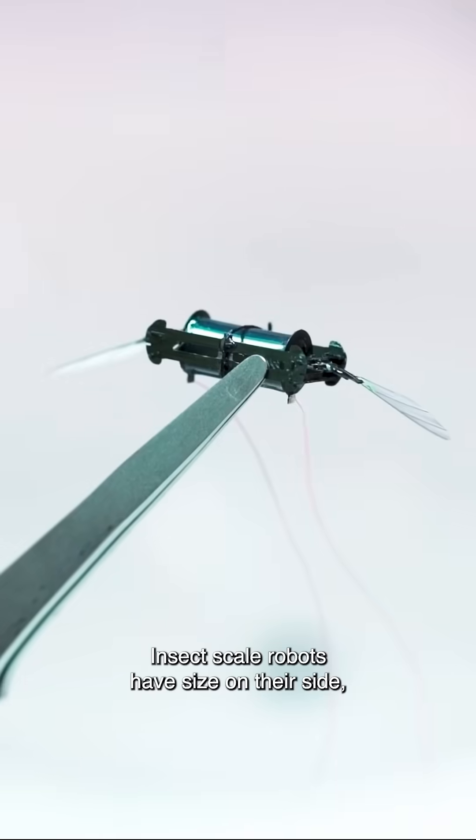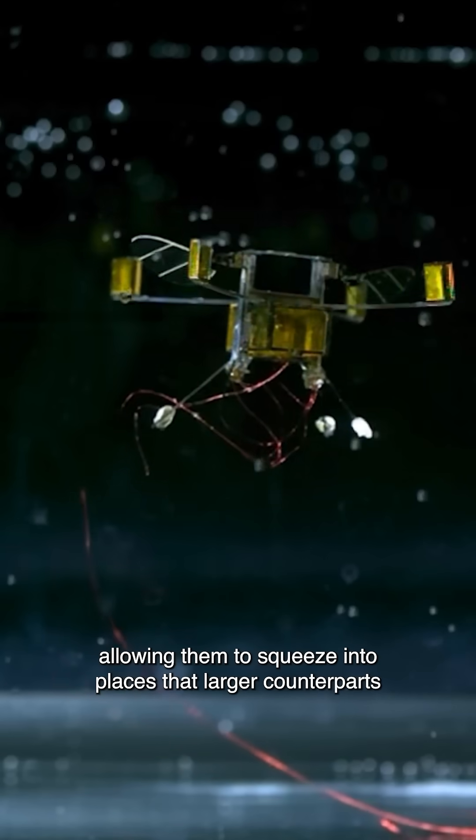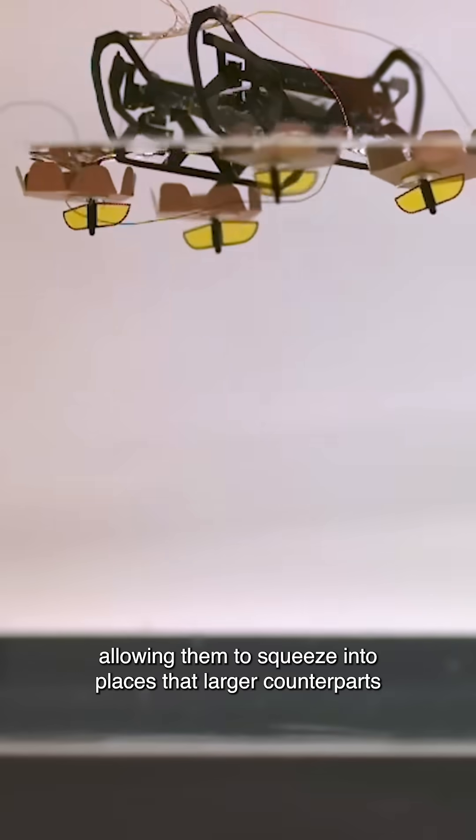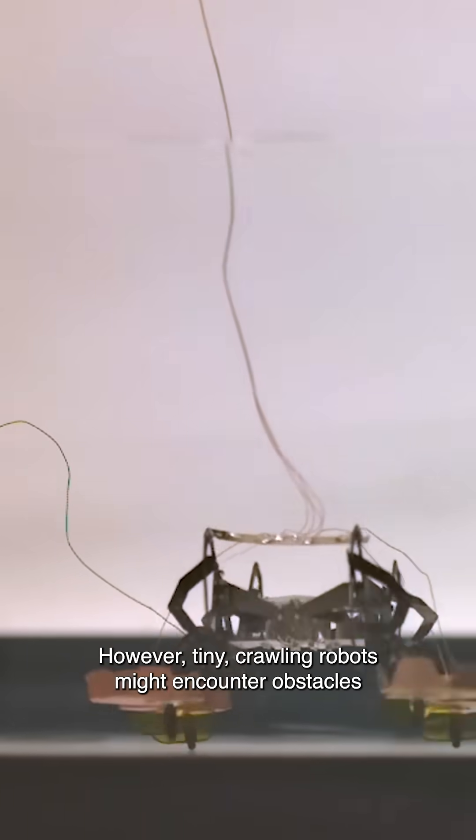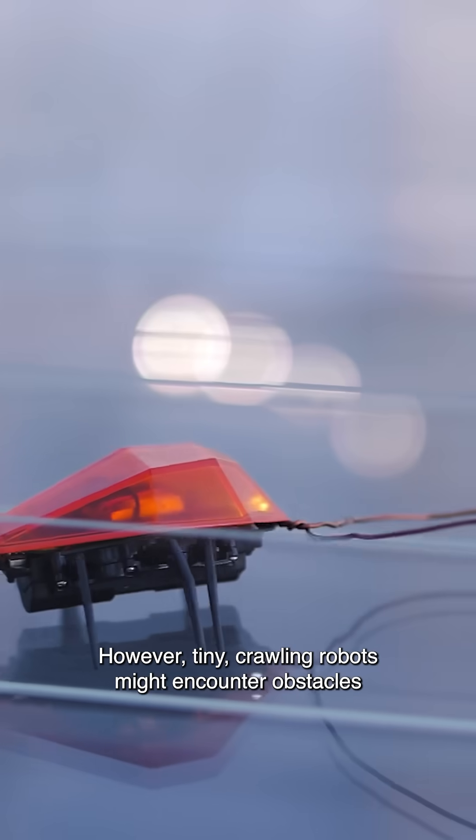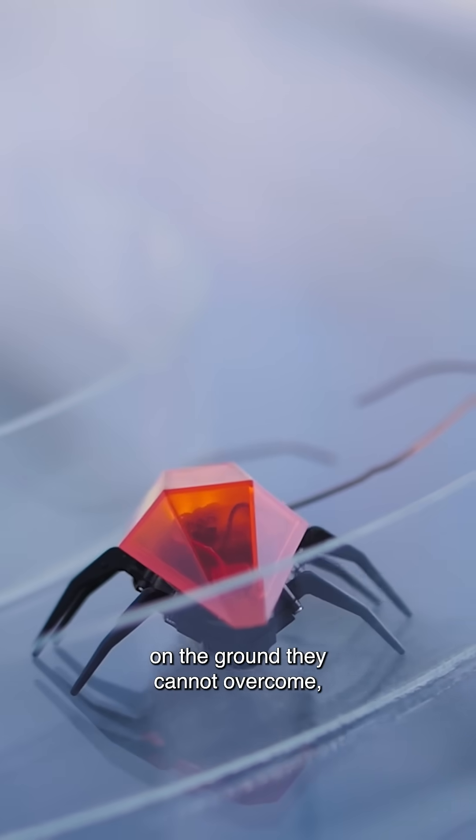Insect scale robots have size on their side, allowing them to squeeze into places that larger counterparts can't. However, tiny crawling robots might encounter obstacles on the ground they cannot overcome.